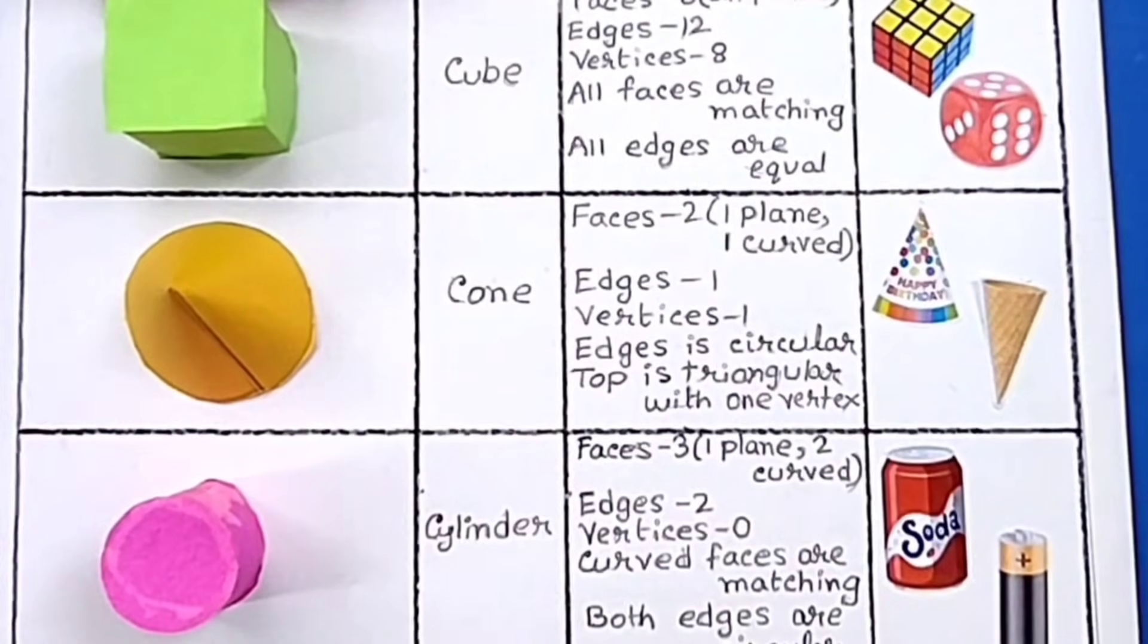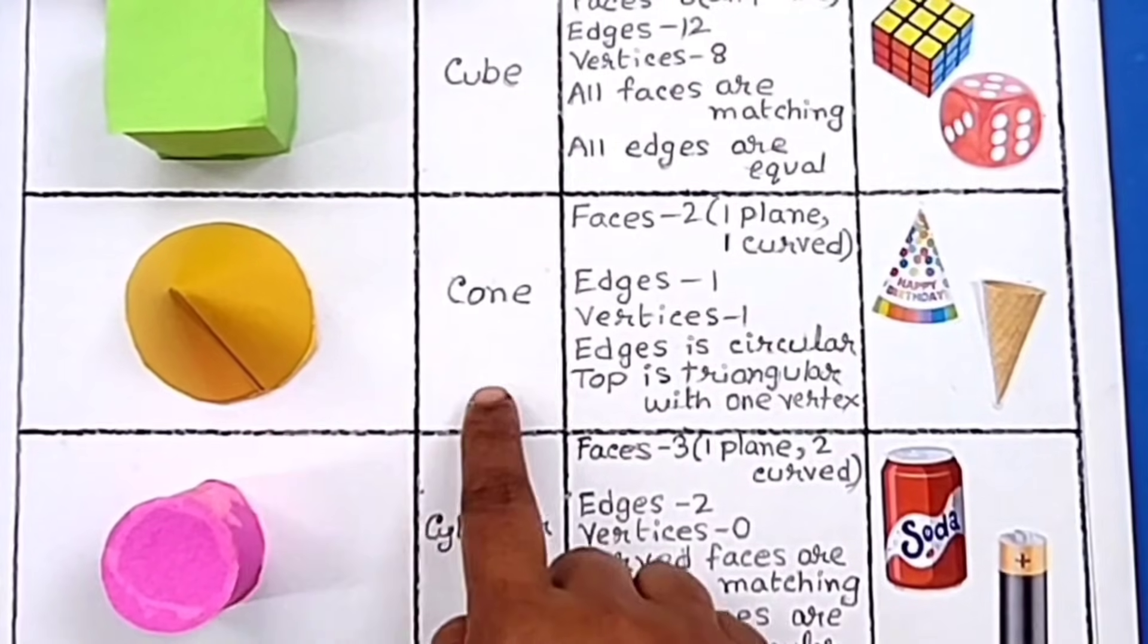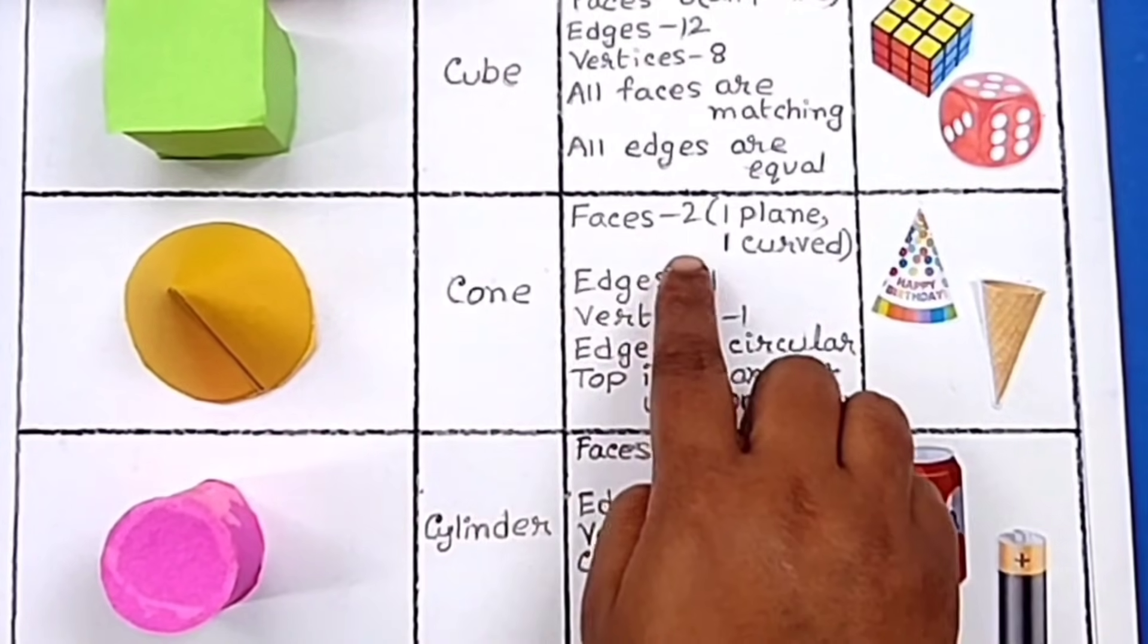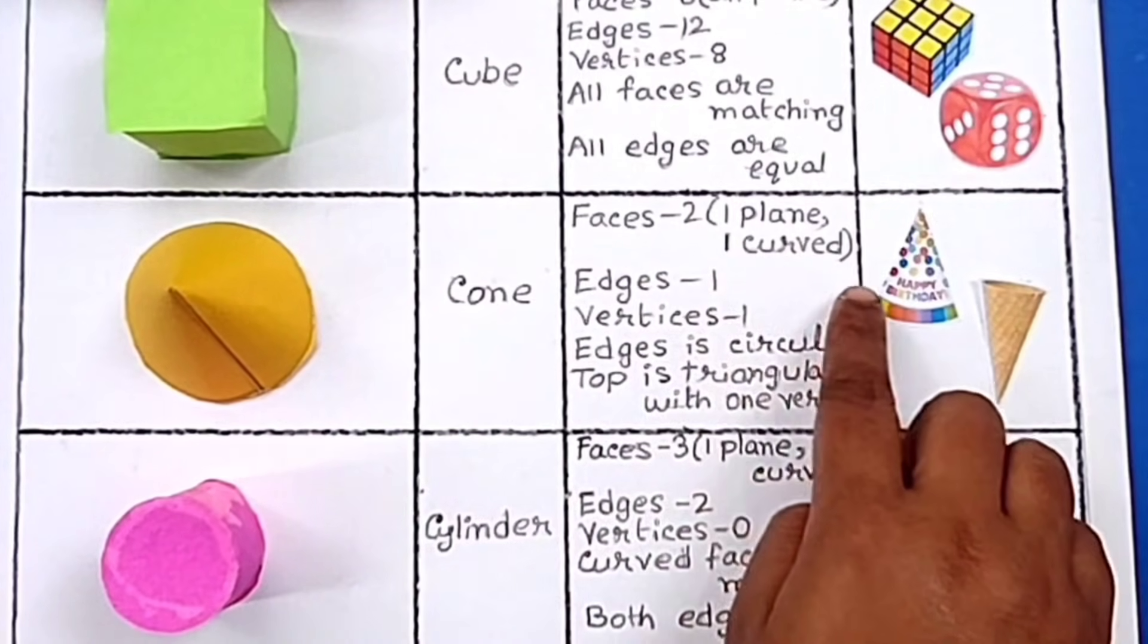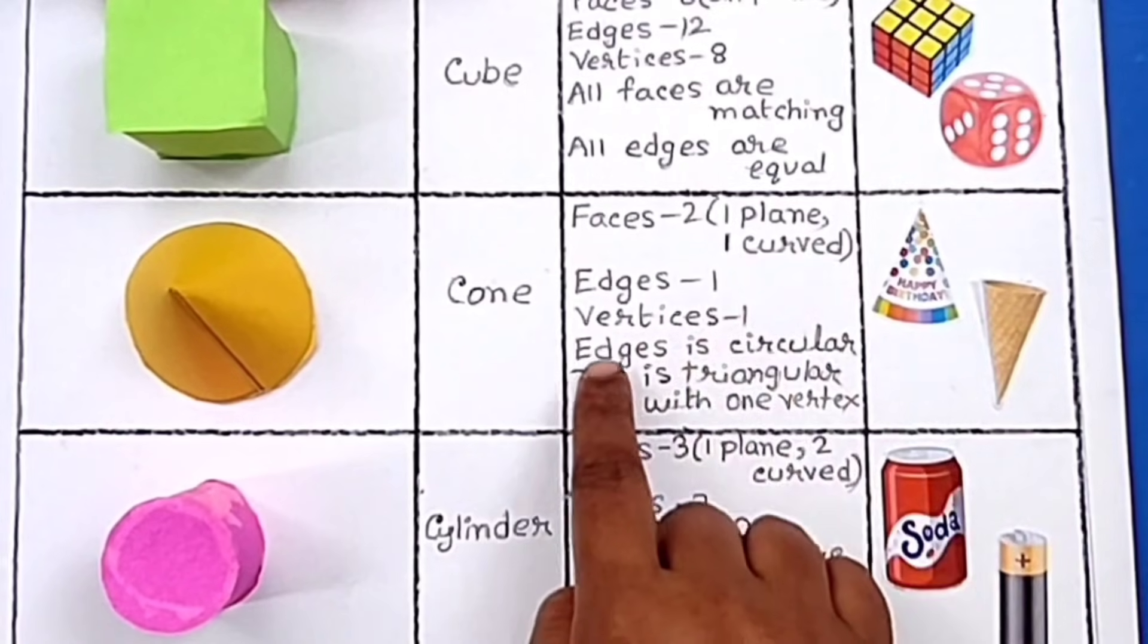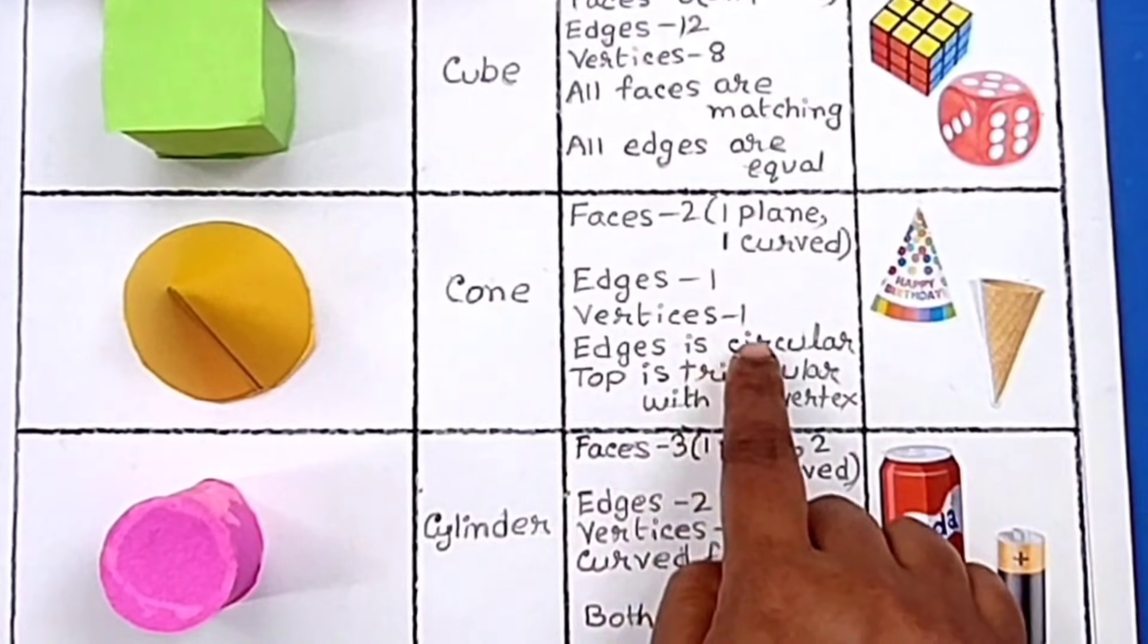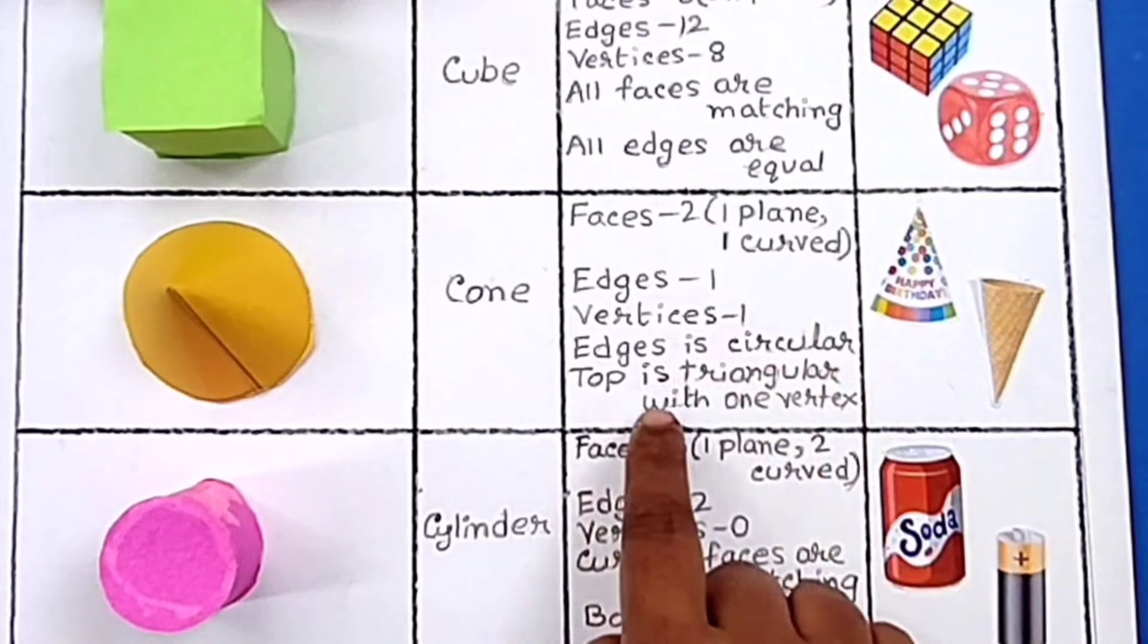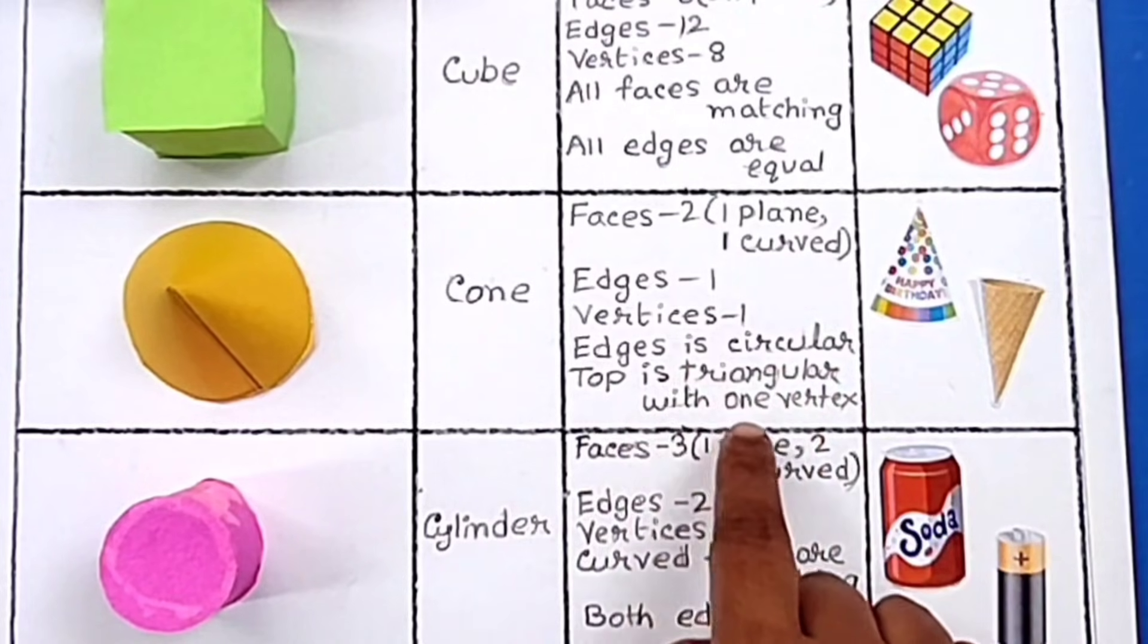The next shape is cone and the properties are: faces 2, one plane and one curved; edges 1; vertices 1; edges is circular; top is triangular with one vertex.